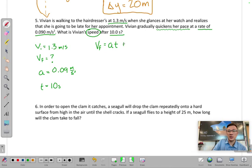So final velocity is equal to acceleration multiplied by time plus initial velocity. This is no different than this equation right here. Acceleration is equal to change in velocity over time. Remember, change in velocity is final minus initial velocity.